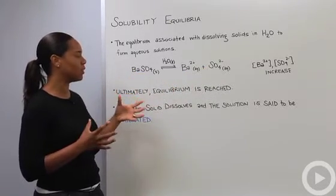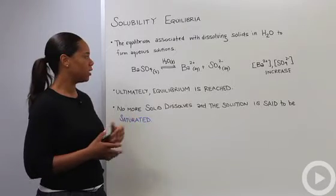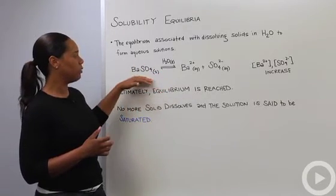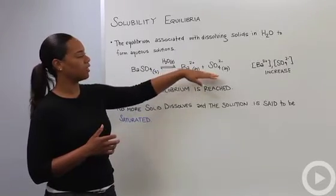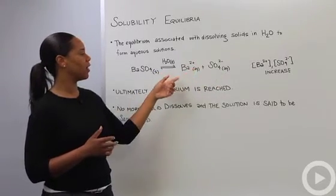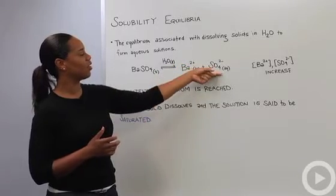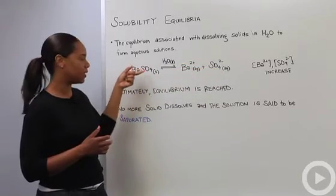At some point, ultimately, equilibrium is reached, when the forward reaction—the rate at which barium sulfate dissolves to form barium ions and sulfate ions—is the same as the rate at which barium ions and sulfate ions form barium sulfate solid back.